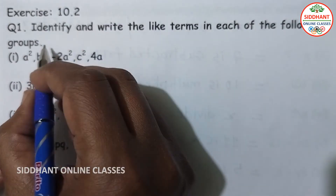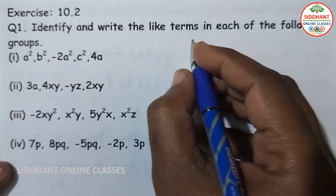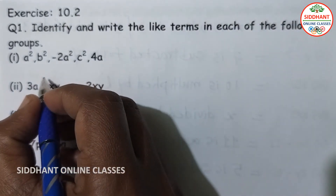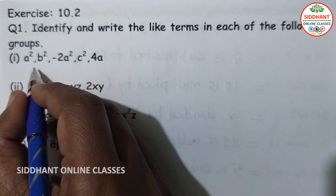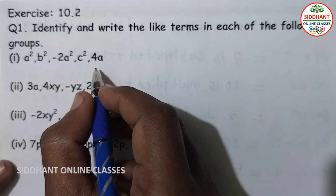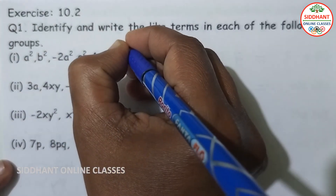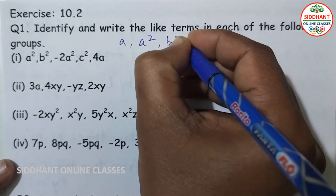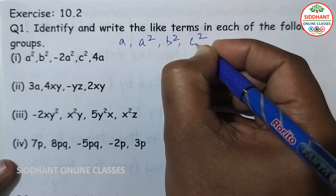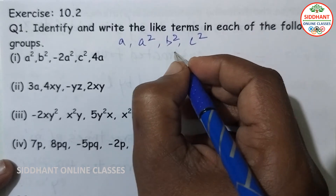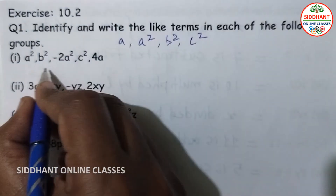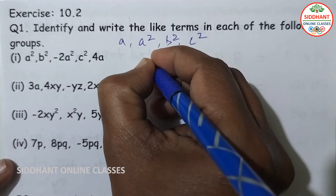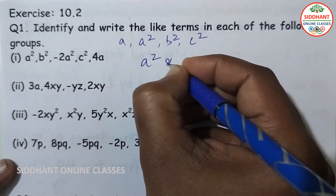Exercise 10.2, question number 1: identify and write the like terms in each of the following groups. Like terms — here you are going to see three or four different terms: a square, b square, c square, and so on. Like terms means we look for matching variable parts.